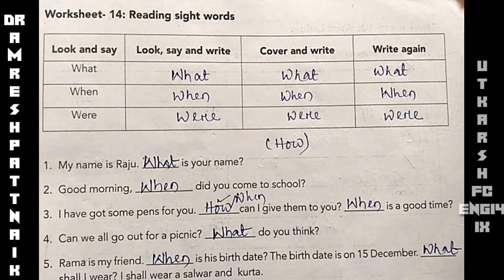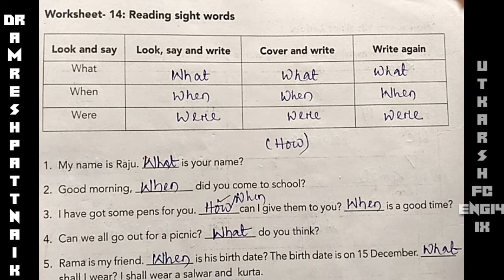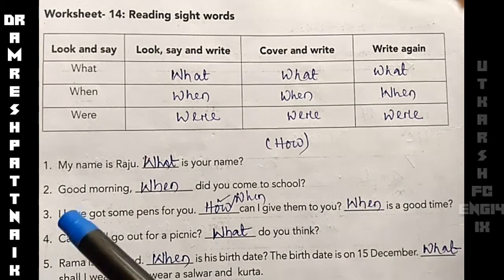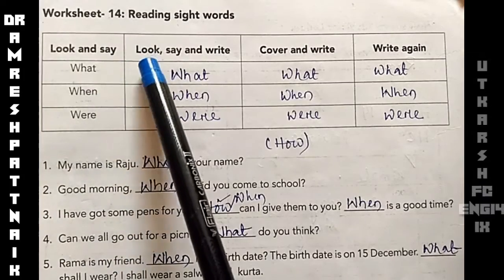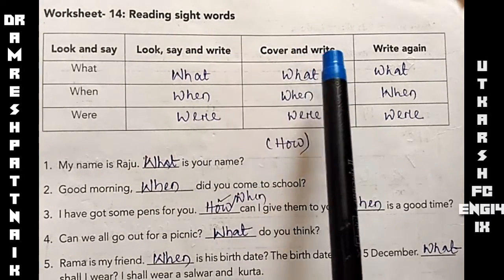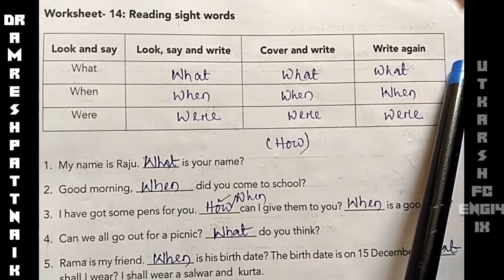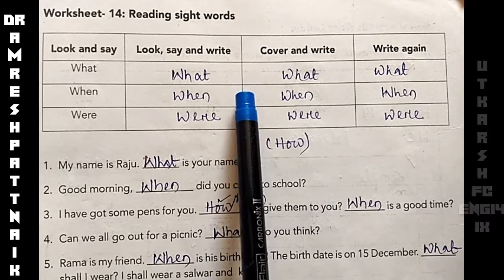Good morning everybody. Today we will start English Utkarsha class 9, worksheet number 14. Here: reading sight words. Here: look and say. Here: look, say and write. Here: cover and write, and write again. So for your better practice it is given three times.